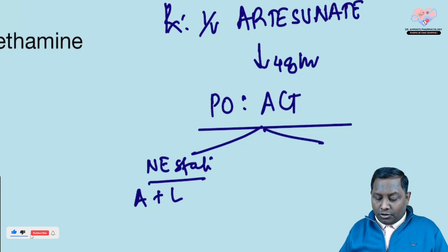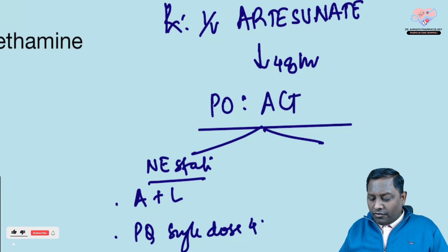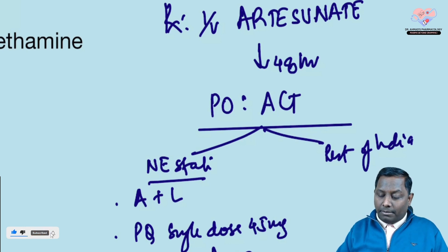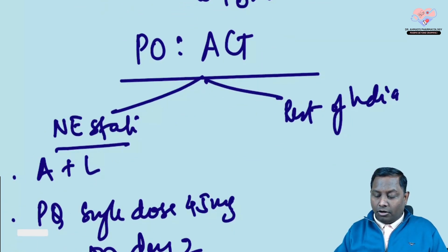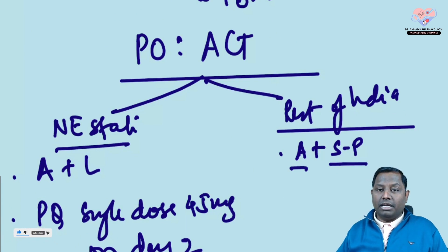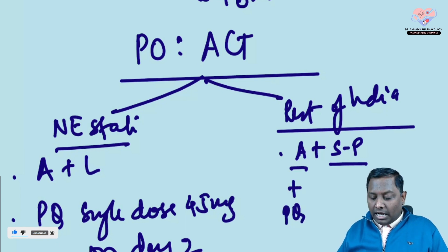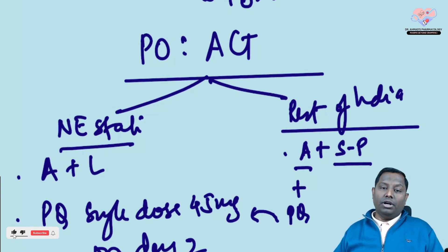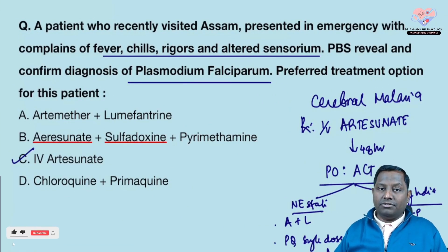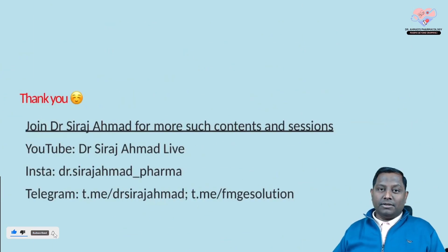If the patient is from a northeast state, use artemether plus lumefantrine (AL), plus a single dose of primaquine 45 mg on day two. If the patient is from the rest of India, use ASP — artesunate, sulfadoxine-pyrimethamine — plus the same primaquine single dose 45 mg on day two. IV artesunate is the drug of choice for cerebral malaria.